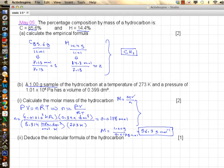Now I rather did it a little bit more tedious than what I could have done. Notice 273 and 101 kilopascal—these are conditions for STP. And remember, at STP, one mole of any gas occupies 22.4 decimeter cubed.